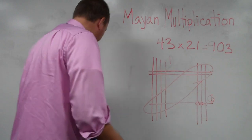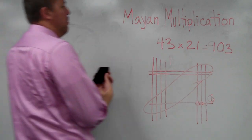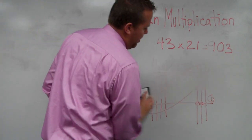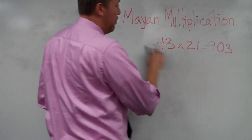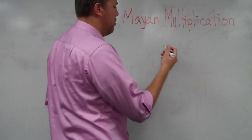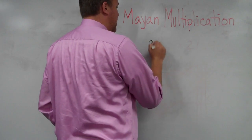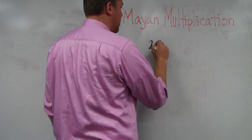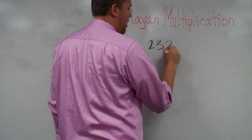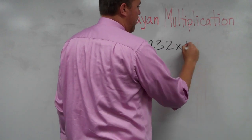Wanted to show you now just a 3 by 2 because it works the same way, just with a little bit more lines. Okay. So once again, this works best with smaller digits. So let's do 232 times 43.